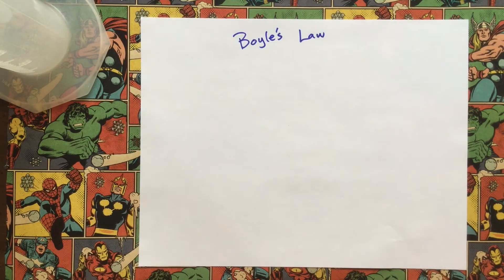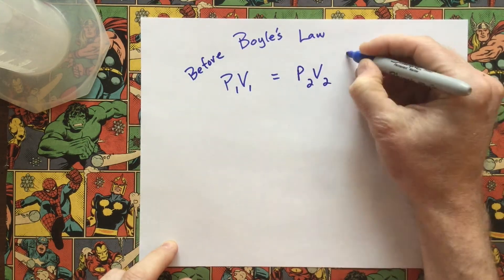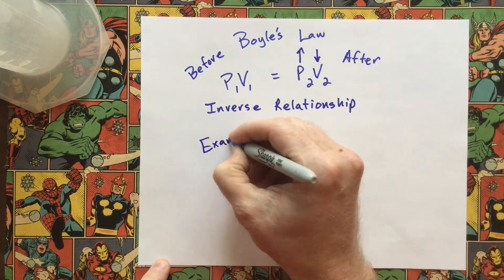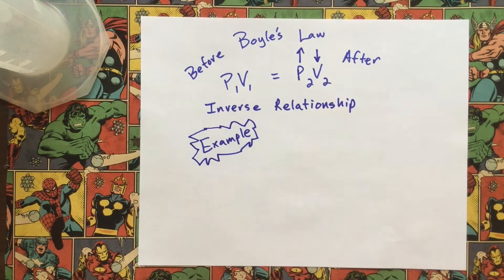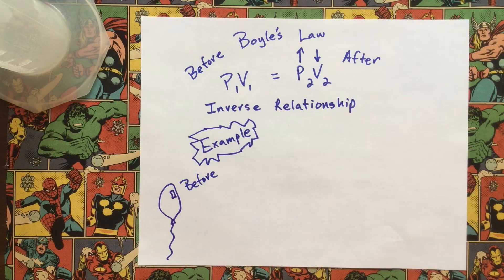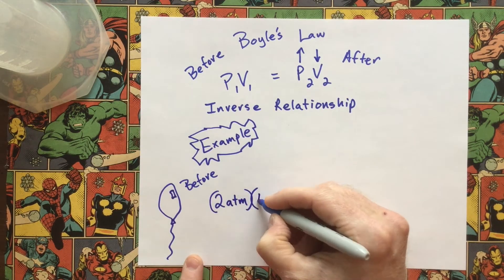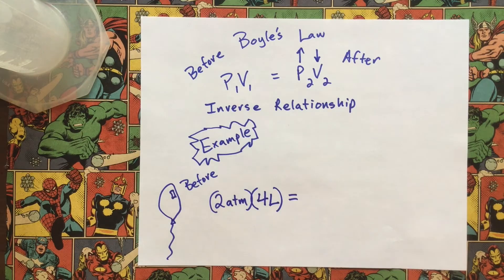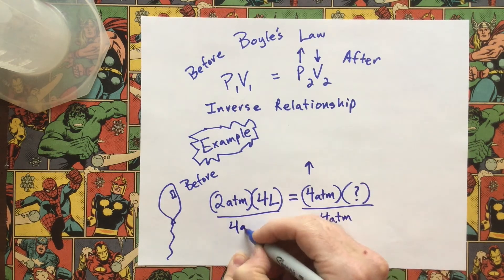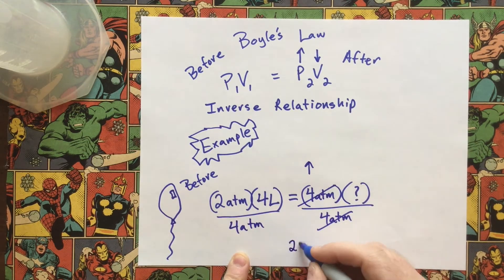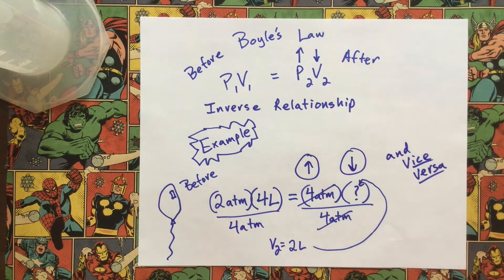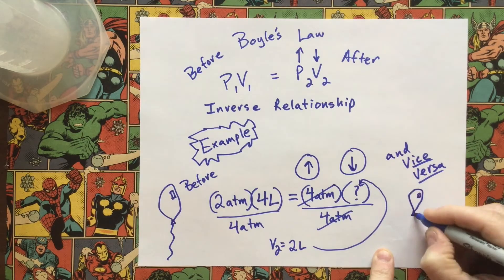Let's consider Boyle's Law. In this equation we have the pressure and volume of a system before, and we compare it to the pressure and volume of the system afterwards. This is an inverse relationship — as one thing goes up, the other one goes down and vice versa. For example, if we have a balloon at two atmospheres and a volume of four liters, and we apply a new pressure of four atmospheres, solving for the unknown gives us a new volume of two liters. As one goes up, the other goes down — now we have a balloon that's smaller in size.